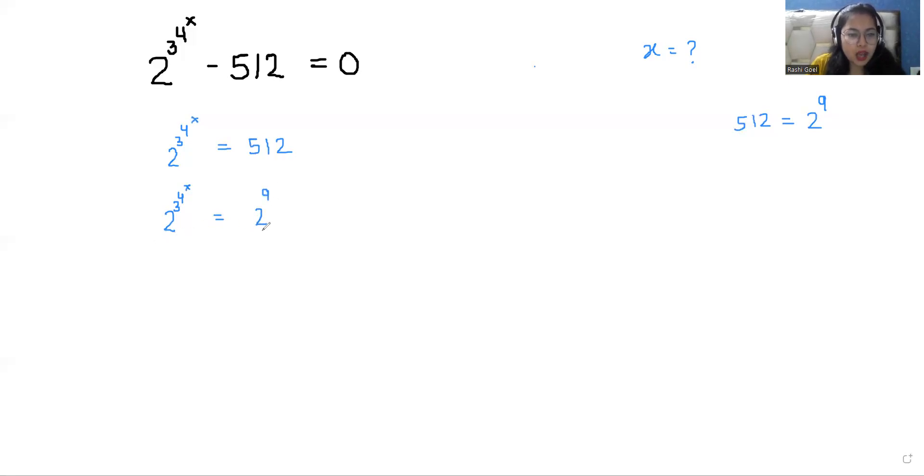Now the bases are the same, that means the powers are also equal to each other. So 3^(4^x) = 9. Now I can write 9 as 3^2. So 3^(4^x) = 3^2.